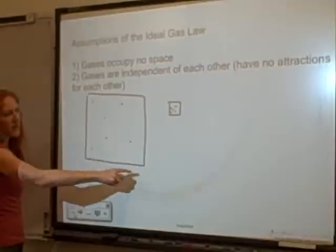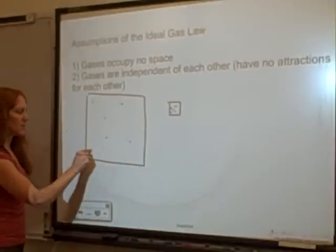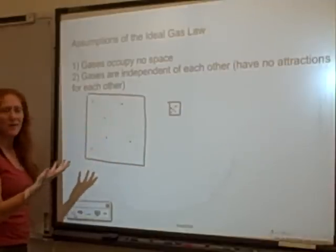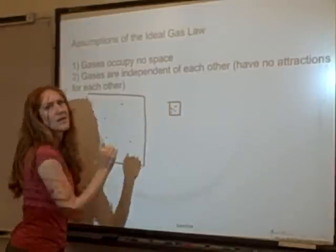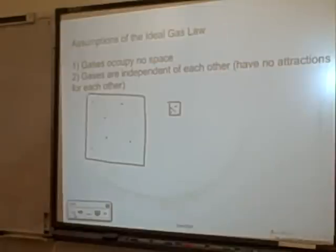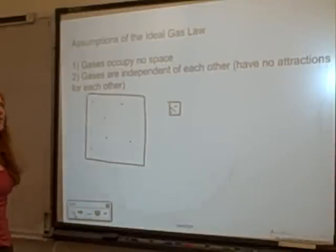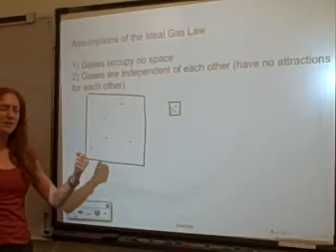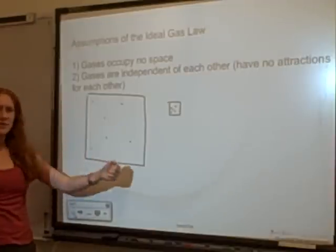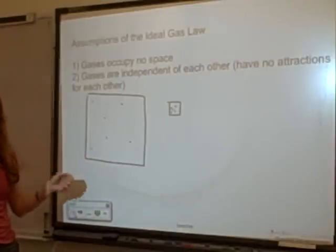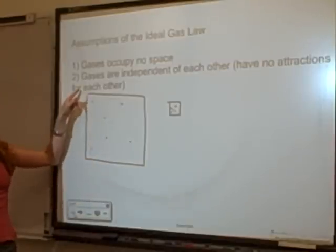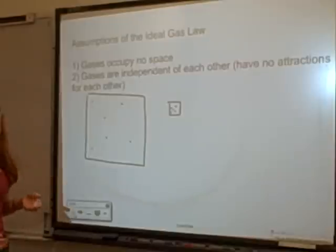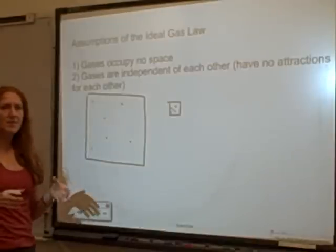In a large space, the volume of these tiny particles doesn't matter much — though it might matter more if they're compressed into a smaller area. The second assumption is that gases are independent of each other, meaning they have no attractions. If gases collide, they just bounce off each other, almost like super balls bouncing continuously.